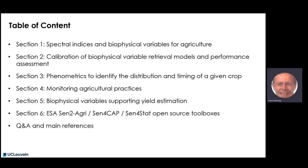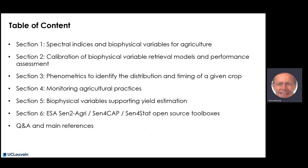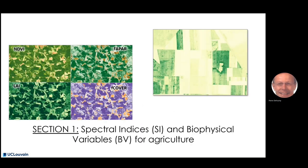This training module is organized in six sections, starting with the theoretical background on spectral indices and biophysical variables, then focusing on methods for their estimation. Sophie Bontemp will introduce phenometrics to describe the crop cycle and the monitoring of agriculture practices. The use of biophysical variables for yield estimation and some open-source toolboxes will be presented. We will conclude with a question and answer session. Let's start with Section 1 to introduce spectral indices and biophysical variables for agriculture.